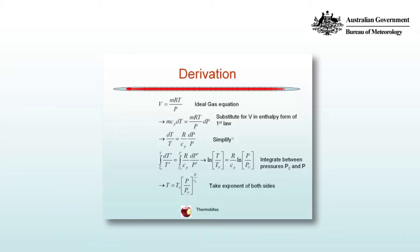On the right hand side that can also be written as log of p on p0 to the r on cp. Then if you take the natural exponent of both sides and take t0 over on the right hand side of the equation, you obtain t equals t0 multiplied by p on p0 to the r on cp. This describes how we can relate the temperature at two different pressure levels, assuming that the parcel exchanged no heat with the environment.